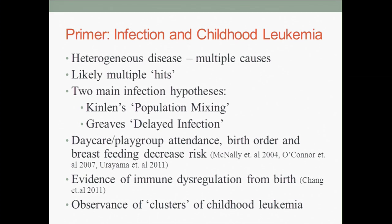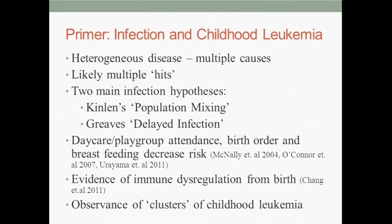So with that, maybe we should get started. I'll give a brief primer on infection and childhood leukemia. As we've talked about today, childhood leukemia is a very heterogeneous disease, and there may be multiple causes or indeed multiple hits along this causal pathway towards disease. There is a growing body of evidence that suggests one of these hits may have to do with either a novel, rare, or indeed a common infection. Two of these main infection hypotheses are well encapsulated in Leo Kinlan's population-mixing hypothesis, which came up around migrations of people around nuclear sites, and Mel Greaves' delayed infection hypothesis.